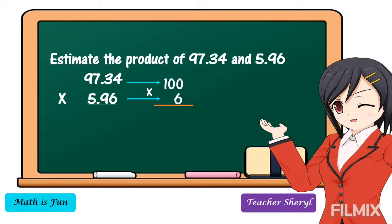Then we're going to multiply the rounded factors: 100 times 6, the answer is equal to 600. Therefore, the estimated product of 97 and 34 hundredths and 5 and 96 hundredths is 600. I hope that you understand our lesson for today.